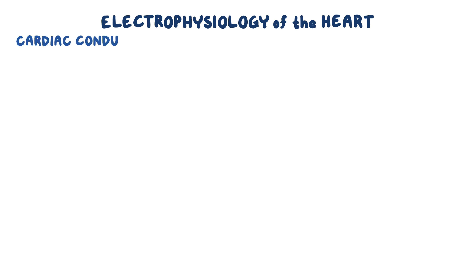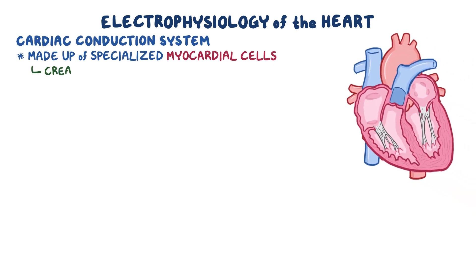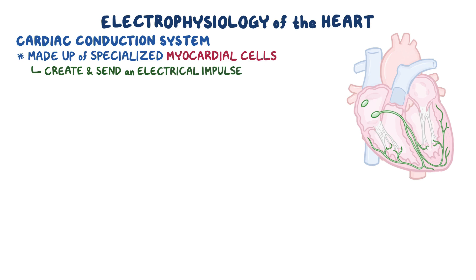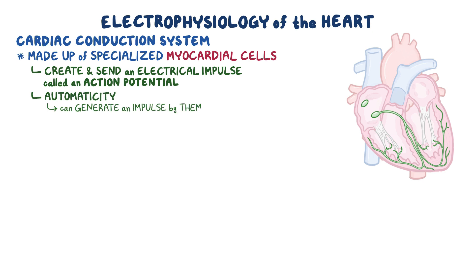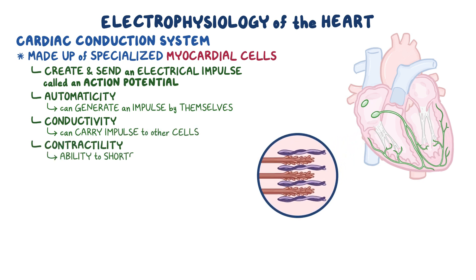Let's quickly review the electrophysiology of the heart. The cardiac conduction system is made up of specialized myocardial cells that can create and send an electrical impulse, also called an action potential. These cells have many special features, including automaticity — meaning they can generate an impulse by themselves — conductivity, meaning they can carry the impulse to other cells, and contractility, which is the ability to shorten the length of their fibers, causing a contraction.